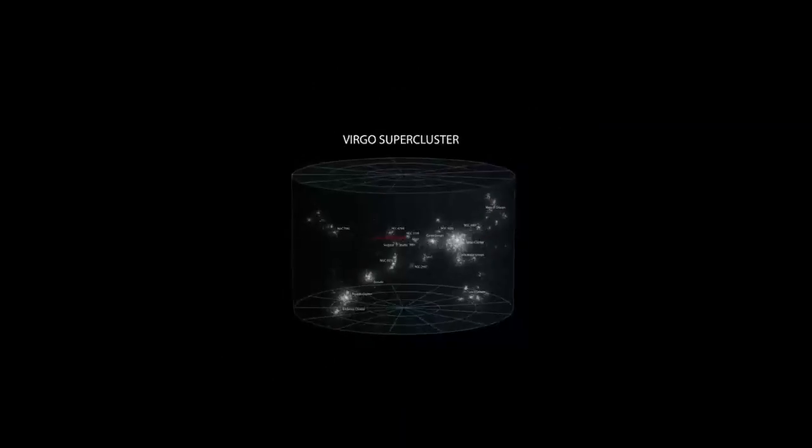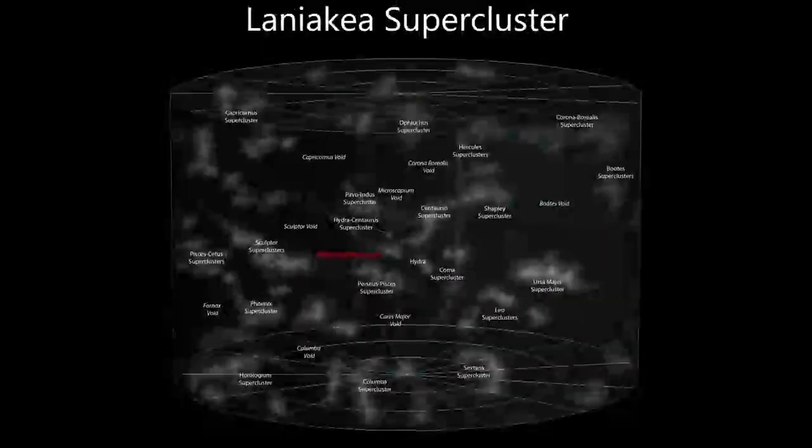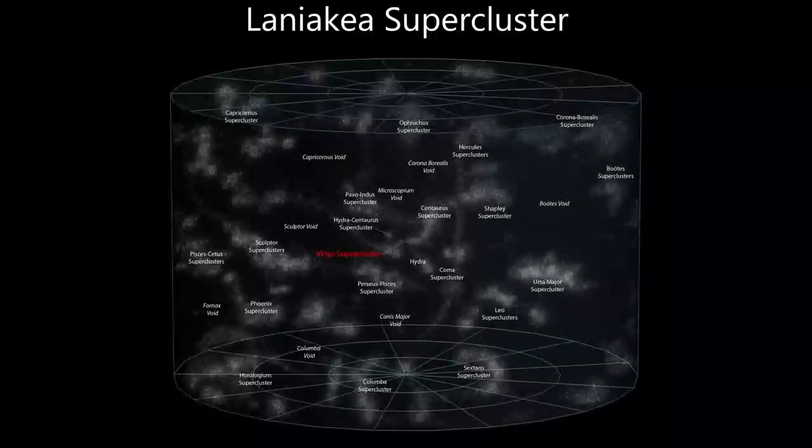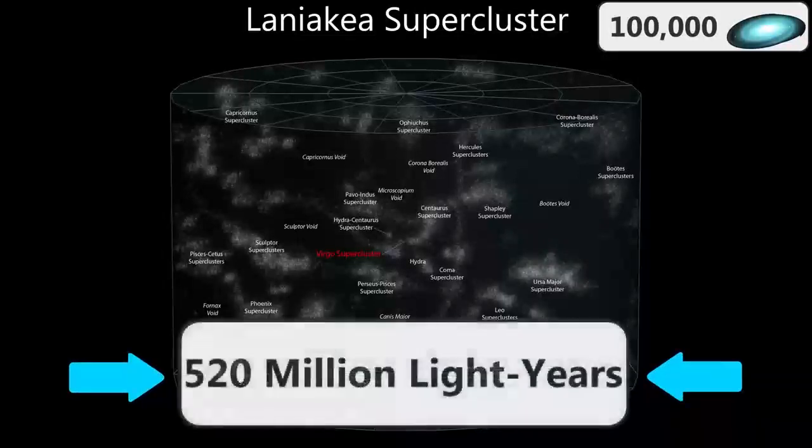But even the massive Virgo supercluster is nothing but a quiet and tiny lobe of the great Laniakea supercluster, an enormous structure that is home to our galaxy as well as 100,000 other galaxies. The distance from one side to the other is 520 million light years,